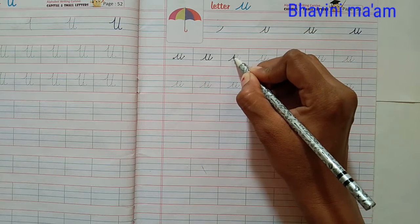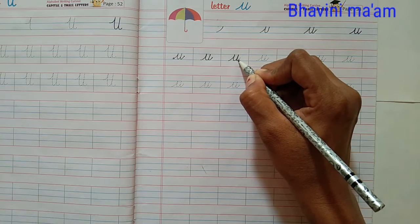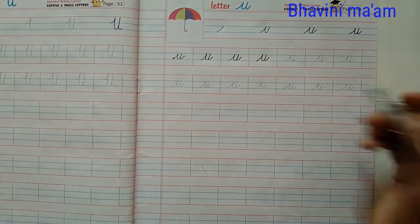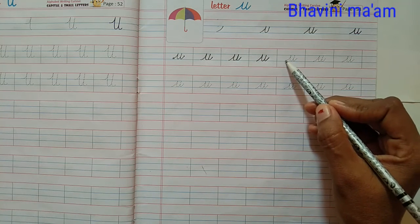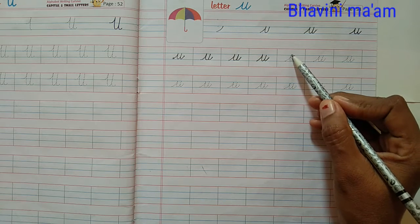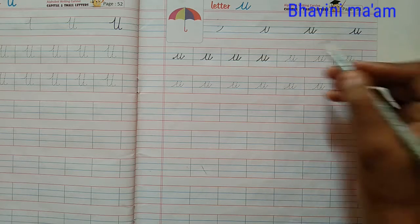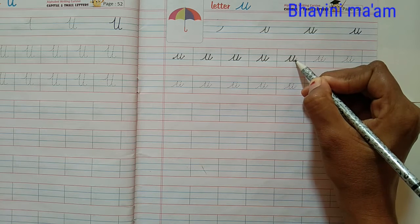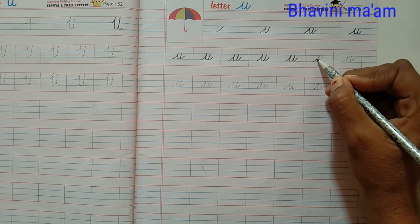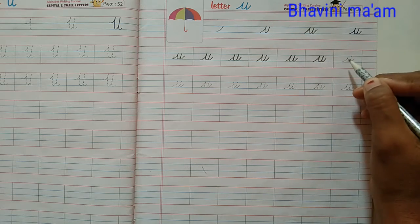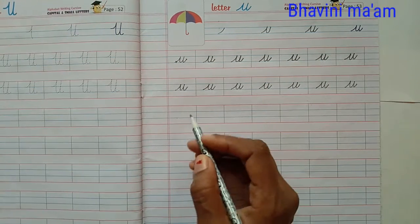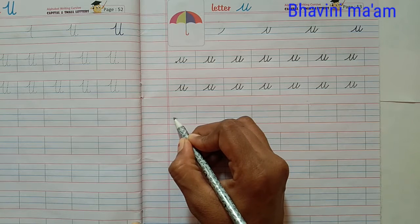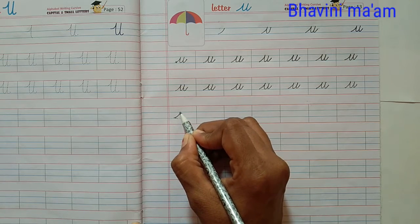U for Umbrella. So we have to do this. Start where do we do this? We have to do this. First, second blue line. Start from first blue line. On the second blue line, go up.